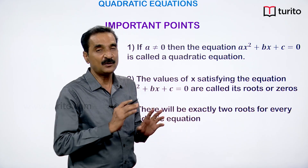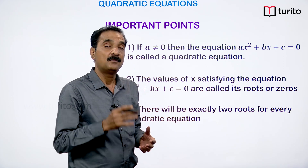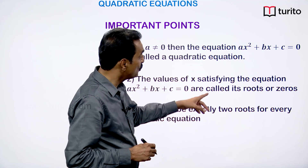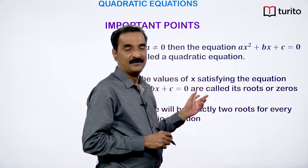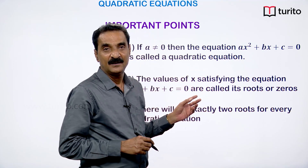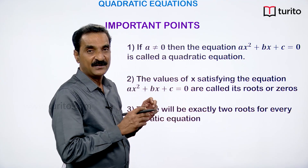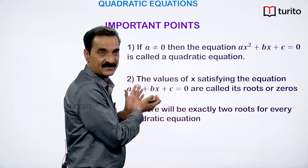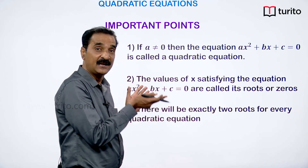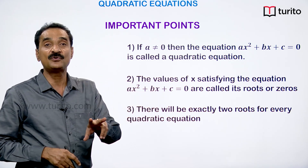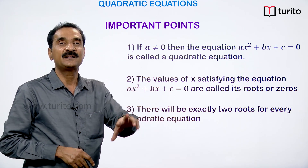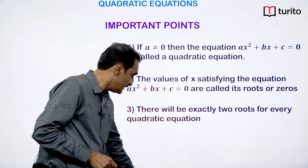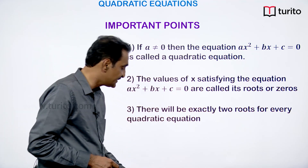Not more than two, not less than two roots. But sometimes the two roots may be equal — you may get only one value of x satisfying the equation, but even then we say there are two roots that happen to be equal.